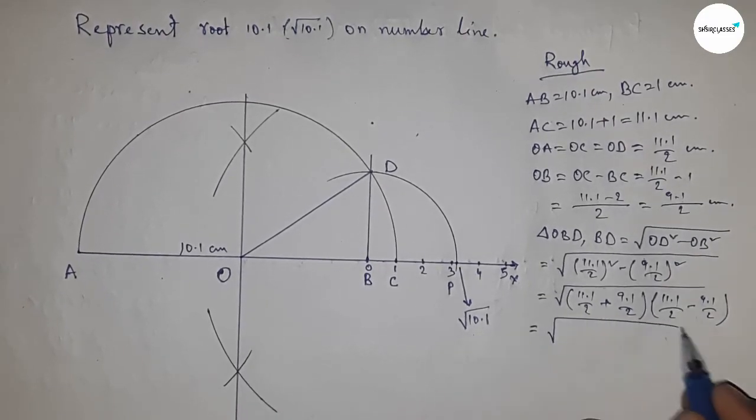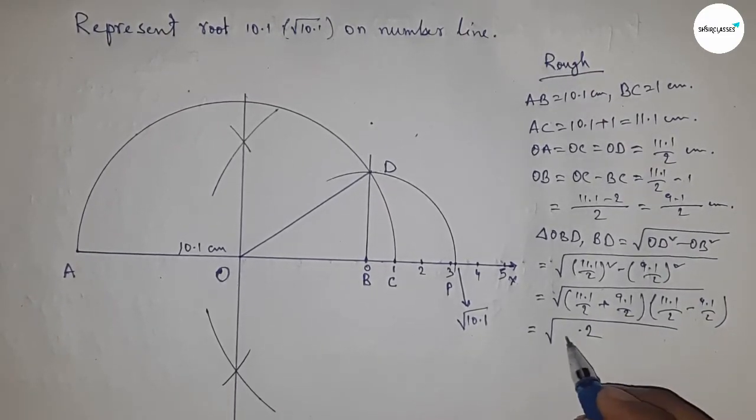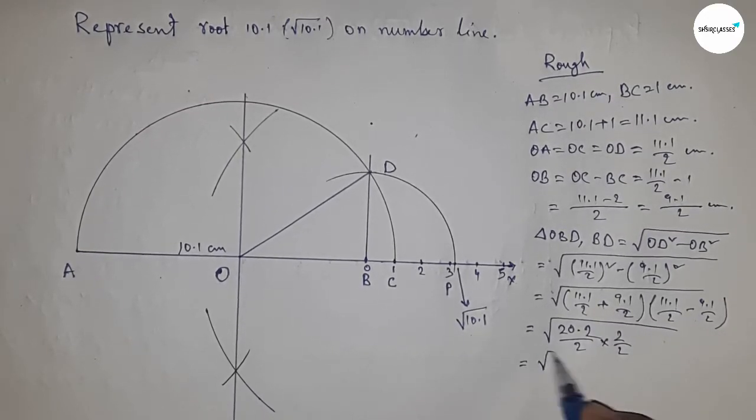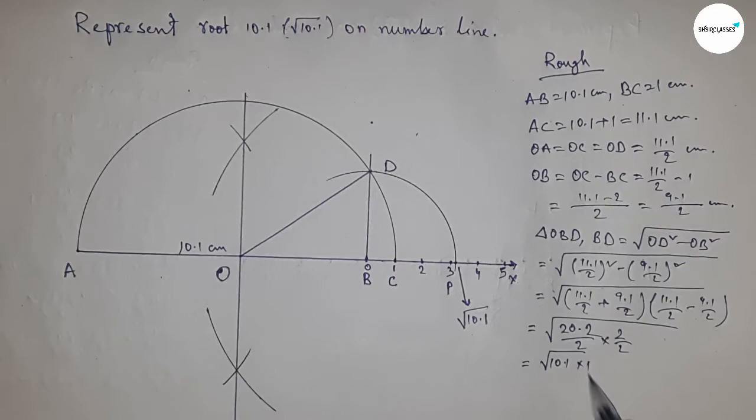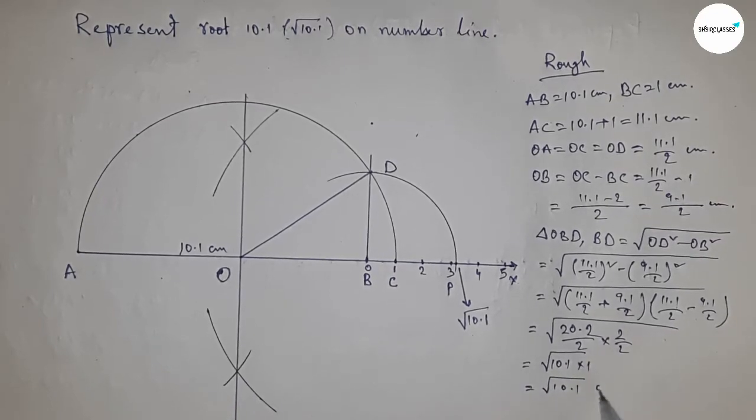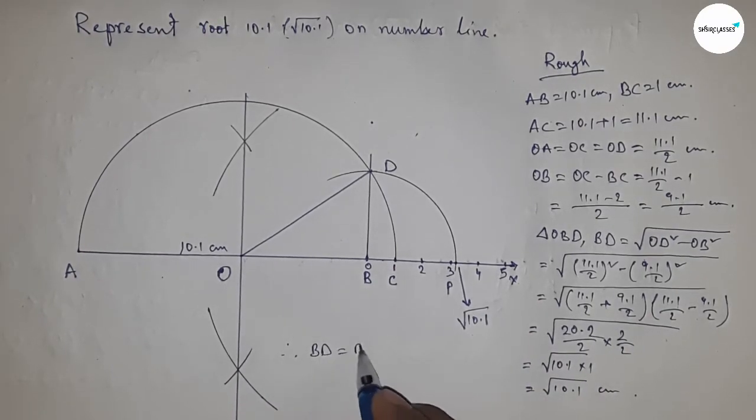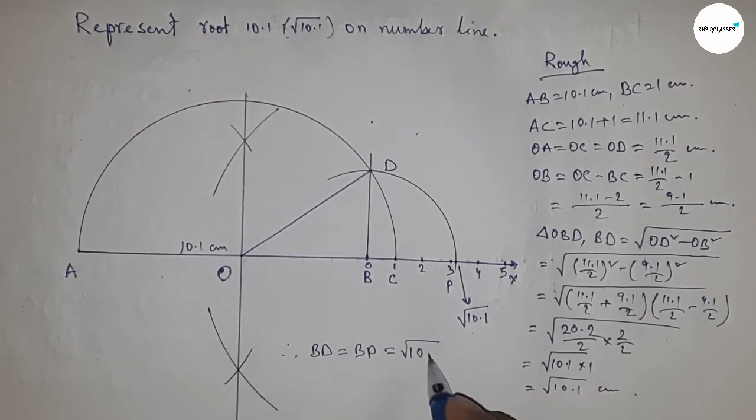From this, so this is 0.2 and this is 20.2 by 2 into 2 by 2, so this is 10.1 into 1, so this is root 10.1 centimeter. Therefore, distance BD and BP are equal to root 10.1 centimeter.